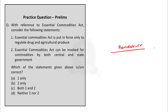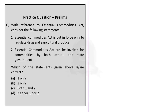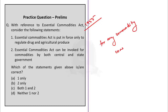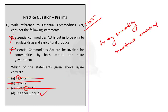We are now at the practice questions segment with two questions for today. The first question: with reference to the Essential Commodities Act, statement one says it is put in force only to regulate drugs and agricultural produce — this is incorrect because ECA can be invoked for any commodity considered essential, including for military reasons. Statement two says ECA can be invoked by both central and state governments — this is also wrong because the statute is a central statute and only the centre can modify the list of essential commodities. The correct option is option D — neither statement one nor two.